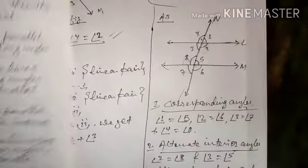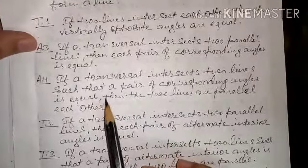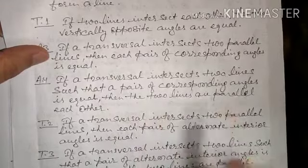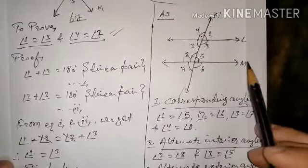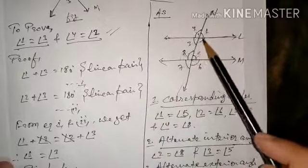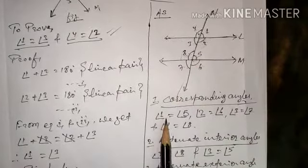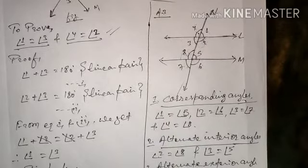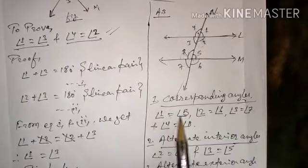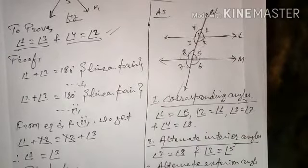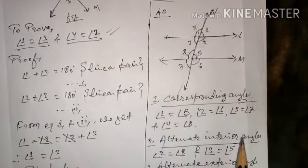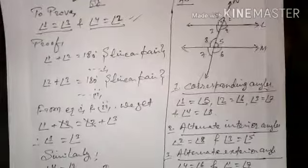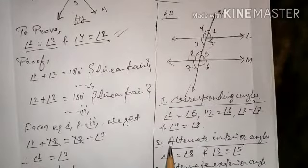Axiom 4 is the converse: if a transversal intersects two lines such that a pair of corresponding angles is equal, then the two lines are parallel. If it is given that angle 1 equals angle 5, this shows corresponding angles are equal, which means line L is parallel to line M. This axiom will help us prove that two lines are parallel to each other in various problems.